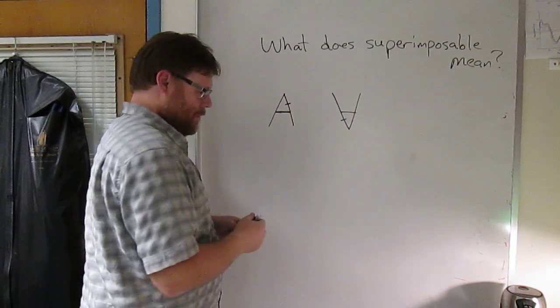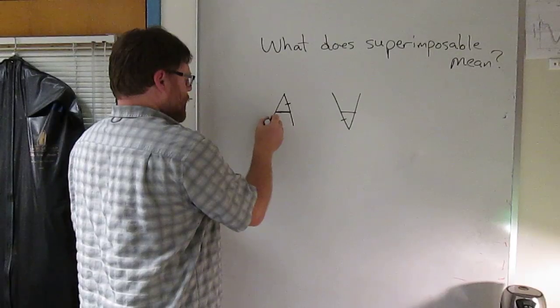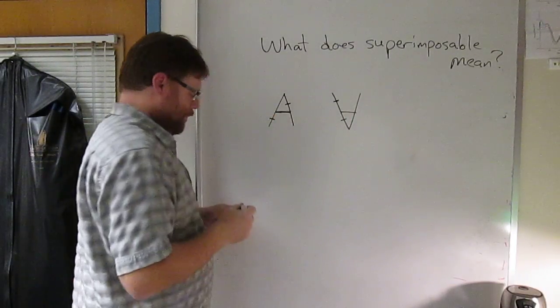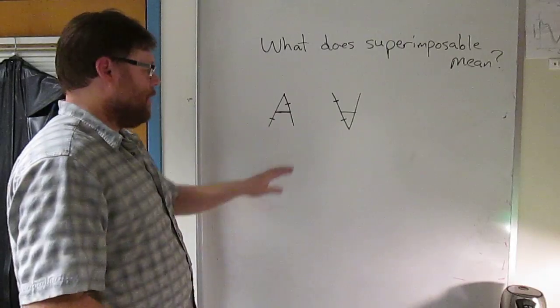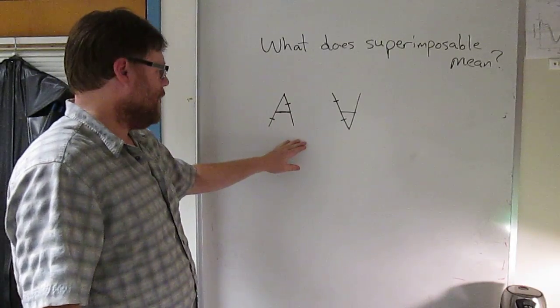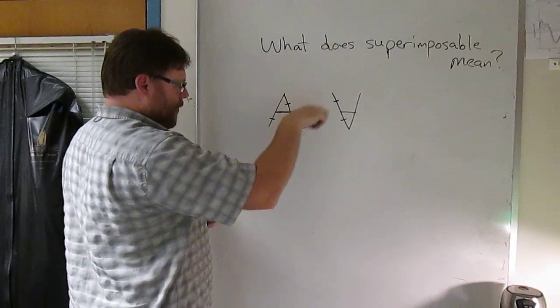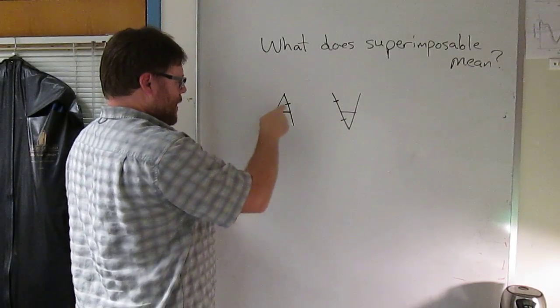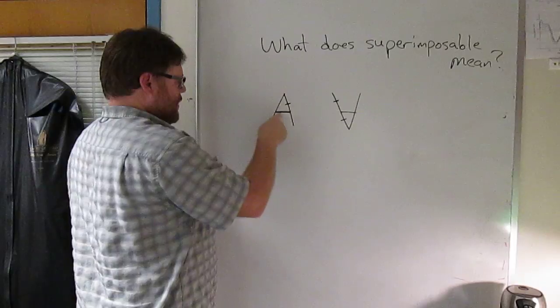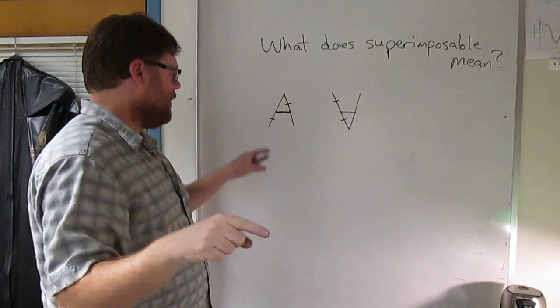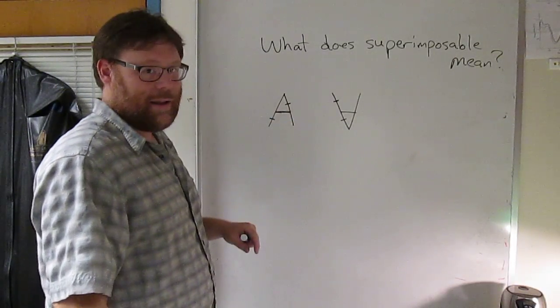But now, what happens if I do this? Put a tick there and a tick there. Now, are these superimposable? And the answer is no, they're not. I can take this A and I can make the A frame line up and I can make one tick line up, but the two ticks are on opposite sides of the A on the left and the two ticks are on the same side of the A on the right.